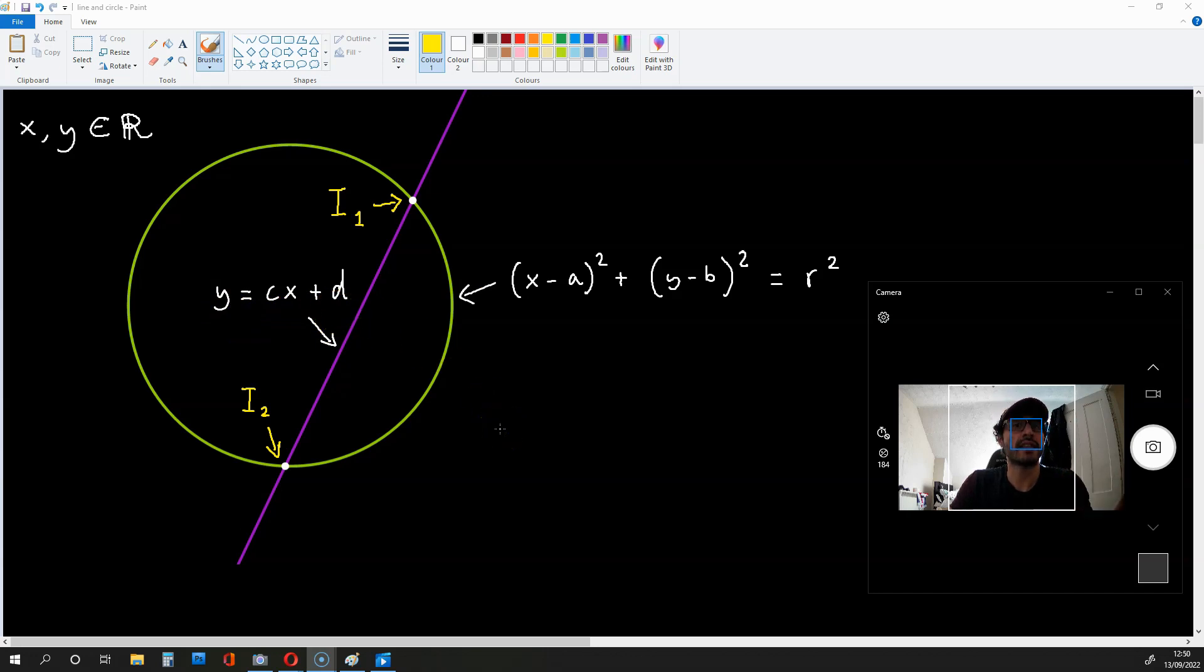Now, if we want to find the intersection points, that is I₁ and I₂, we have to plug this value of y right over here into this equation over here. And once we do that, we can isolate x to find the x coordinates of these intersection points.